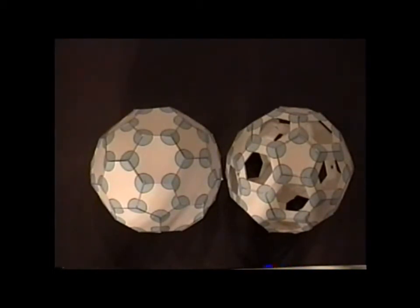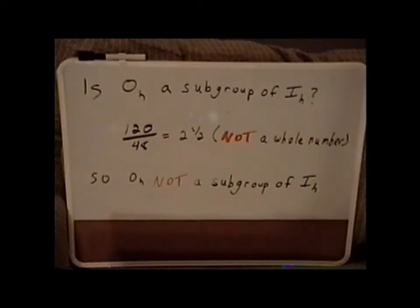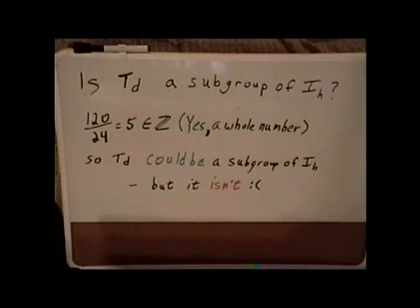We also might want to check D5D. The group D5D has 20 symmetry operations. Since 120 divided by 20 equals 6, and 6 is a whole number, it is possible that D5D is a subgroup of IH. We would have to investigate further to show that this is true. It does turn out that D5D is a subgroup of IH.